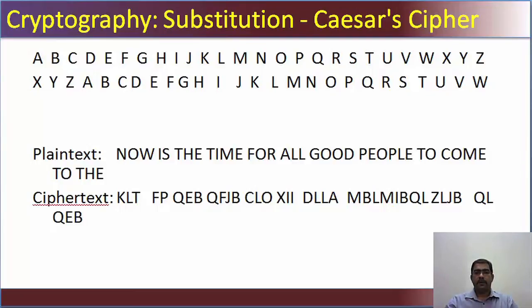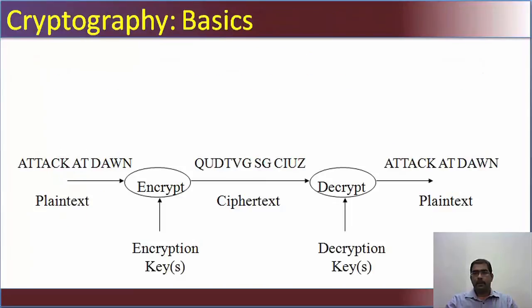Then there is something called the Caesar cipher. The plain text is 'now is the time for all good people to come to the.' Using the Caesar cipher, if you see the two rows on top, 'a' is substituted by 'x,' 'b' with 'y,' and so on. So 'now' becomes 'klt.' 'fp' means 'is.' It is decoded this way to decrypt.